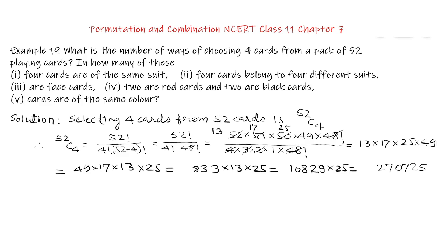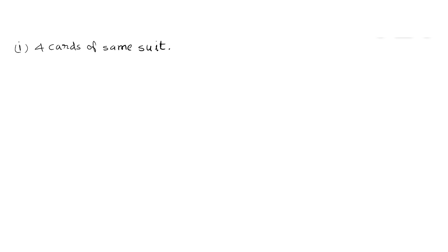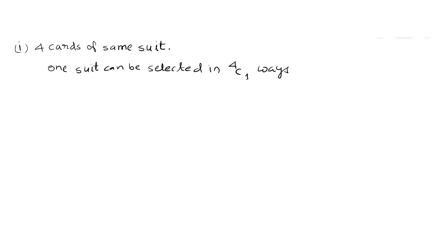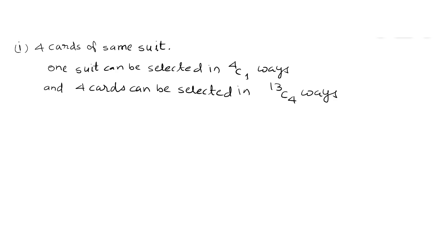So we can select 4 cards out of 52 cards in 270,725 ways. Part 1: 4 cards of the same suit. There are 4 suits in a pack of 52 cards — diamonds, spades, clubs, and hearts. We have to select 4 cards of the same suit. One suit can be selected in 4C1 ways. As each suit contains 13 cards, 4 cards can be selected in 13C4 ways.